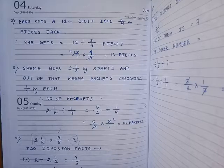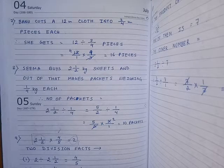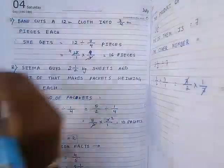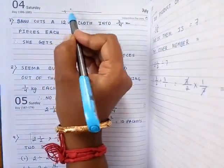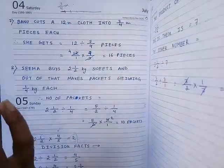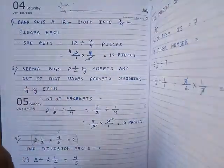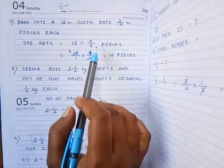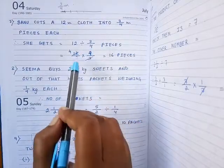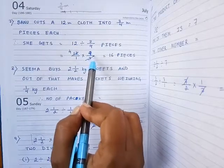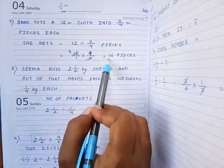Question number 7. Bono cuts a 12 metre cloth into 3/4 metre pieces each. How many pieces does he get? The total length of the cloth is 12 metres. He is dividing it into many pieces. The length of each piece is given, which is equal to 3/4 metre. We have to find the number of pieces. To find the number of pieces, we will do division: write down the total length of the cloth divided by the length of each part, that is 3 by 4. In place of the division sign, write down multiplication and the reciprocal of the second fraction, which is 4 by 3. Now we can cancel: 3 4s are 12, so 4 4s are 16 pieces.